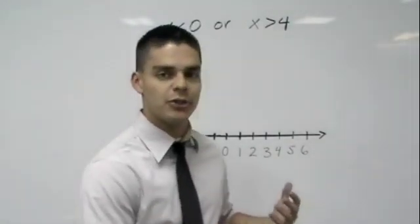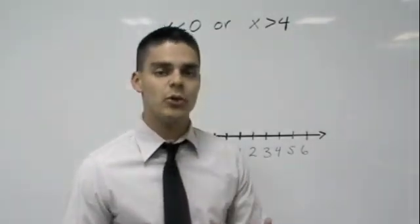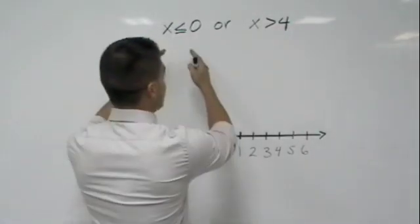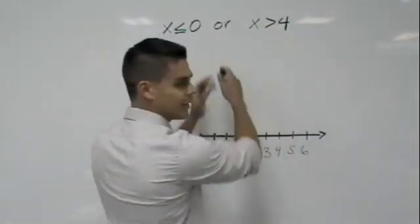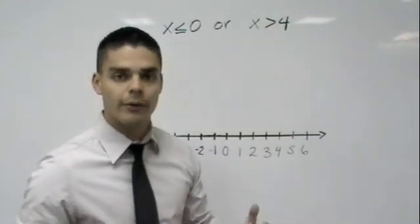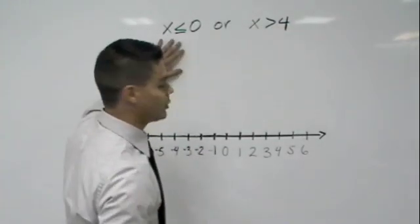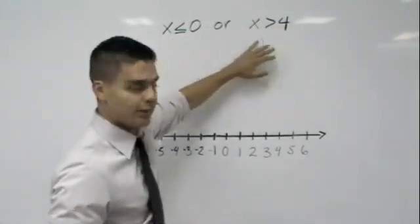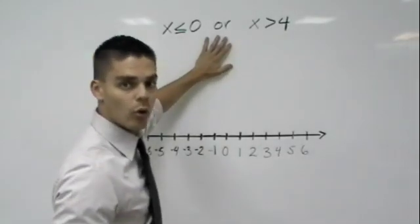For example, I do know what disjunctions are. I'm going to teach them to you guys to show you how all it is is having two inequalities connected by the word OR. So remember disjunctions have two inequalities and they are connected by the word OR.